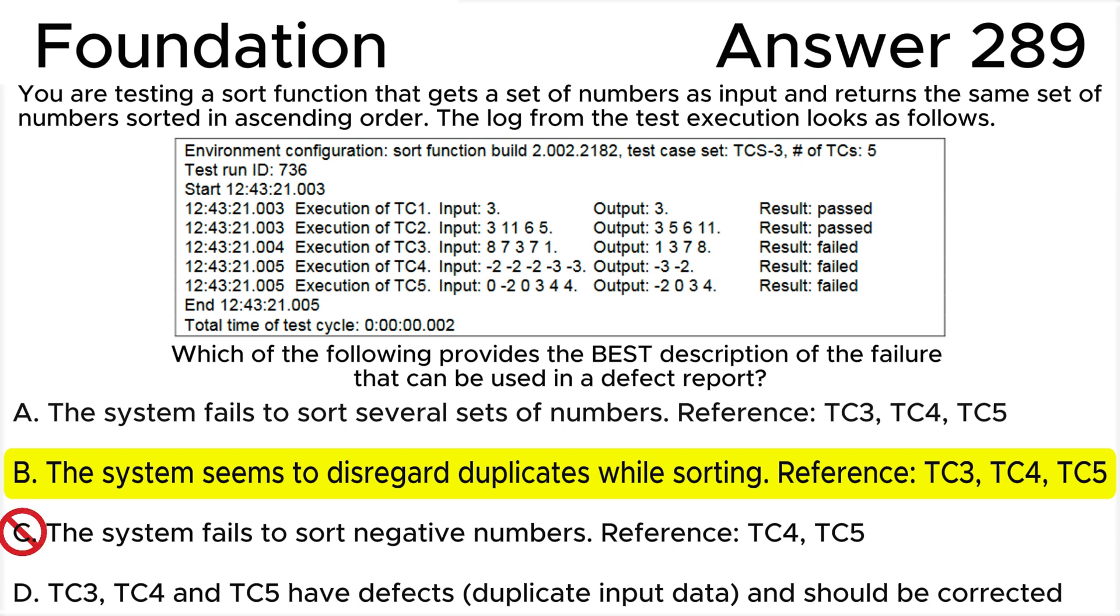Answer C is not correct. The system does not fail in sorting negative numbers. The problem is rather in disregarding duplicates. While Test Case 4 involves negative numbers, the main issue is not with negative numbers per se but with duplicates. Test Case 5, which